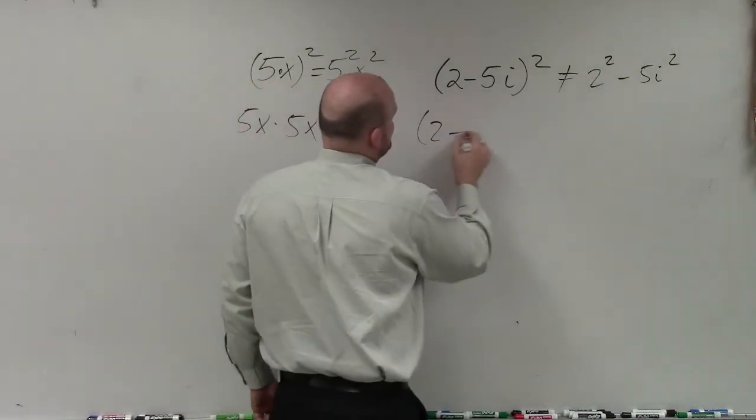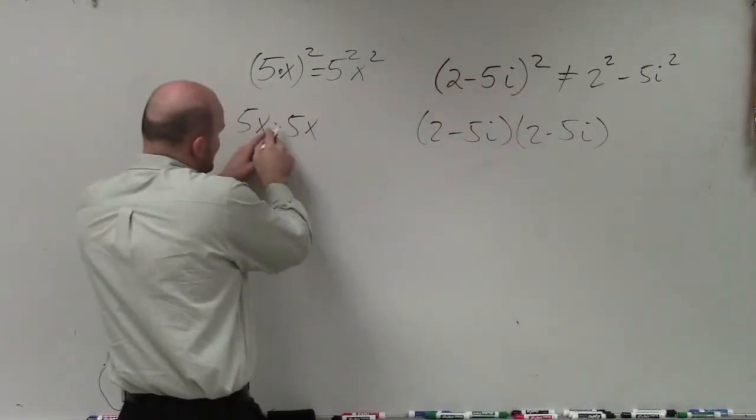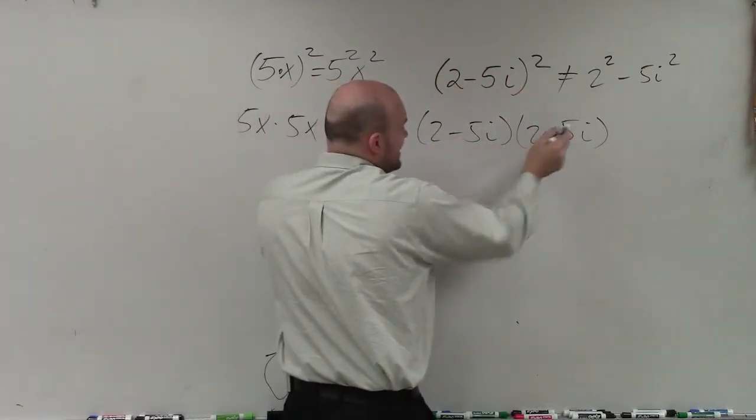(2 - 5i)² means (2 - 5i) times (2 - 5i), just like we did here, 5x times 5x. (2 - 5i) times (2 - 5i).